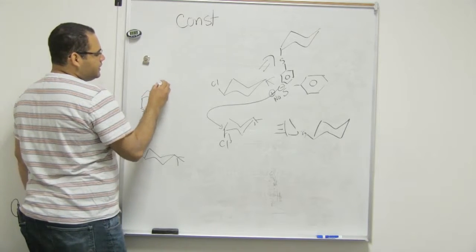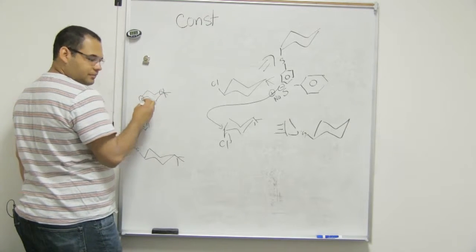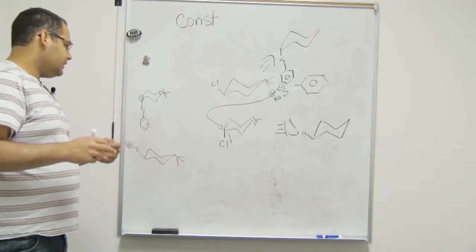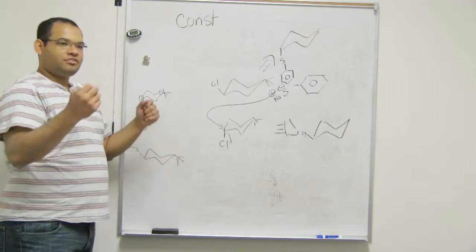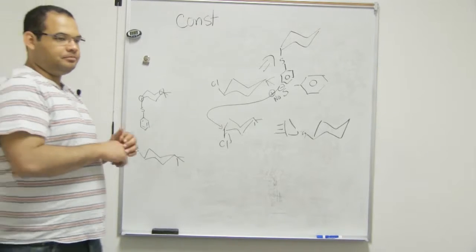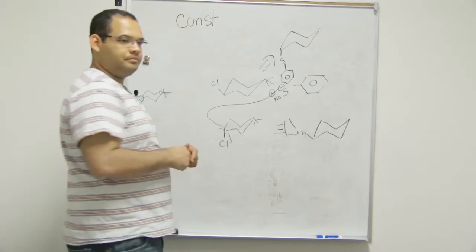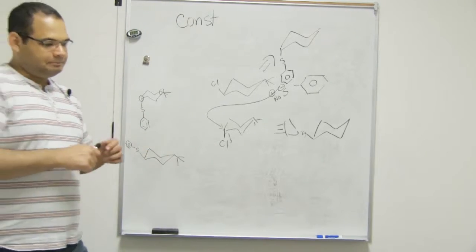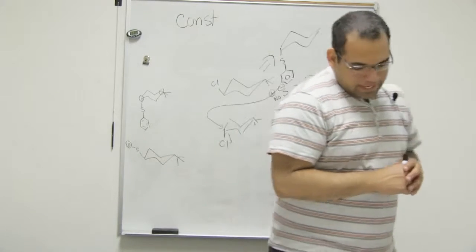So they would have to be diastereomers. Yeah. If you look at this guy here, this is down, this is down. Kind of cis, this is up, this is down kind of trans. So they are diastereomers. Okay. Sweet. That was B. Or no, that was A, excuse me. Yeah. Okay. A and B. Right?